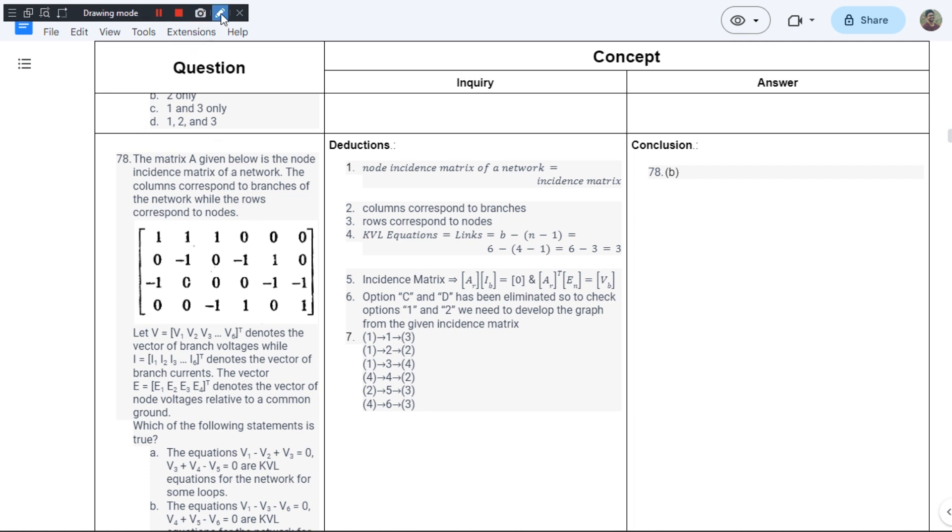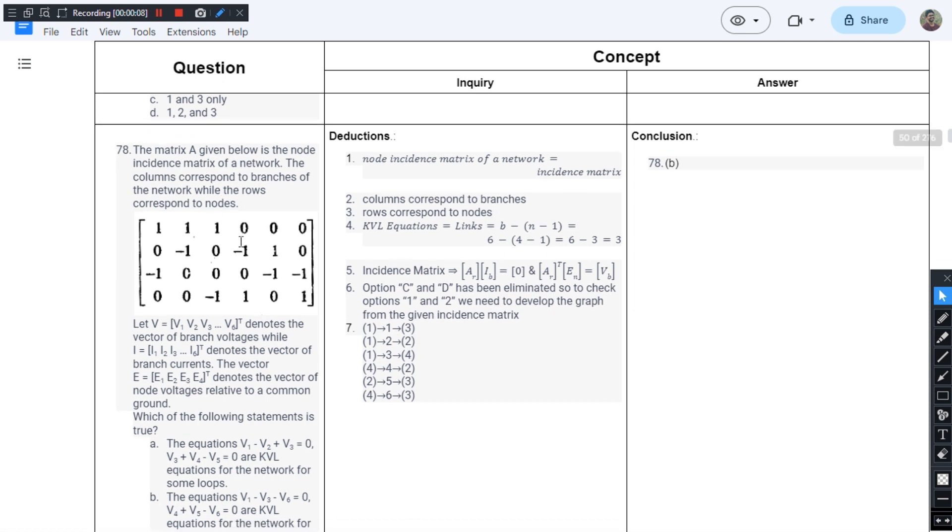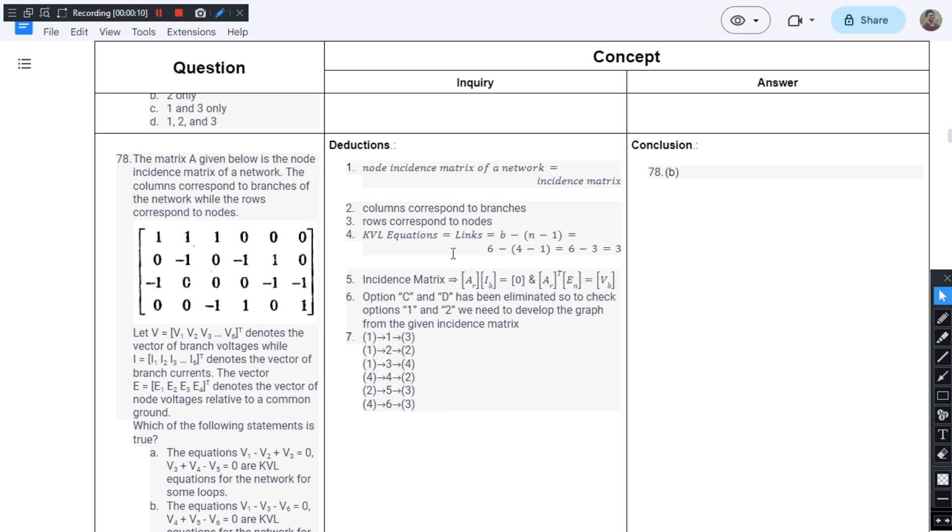This is question number 78 from chapter 1 of JB Gupta's book. The matrix A given below is the node incidence matrix of a network. The incidence matrix columns represent branches of the network while the rows represent nodes.